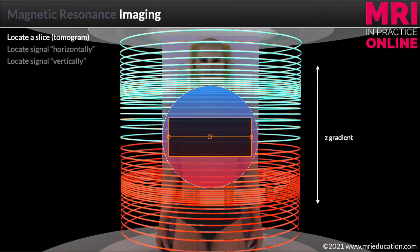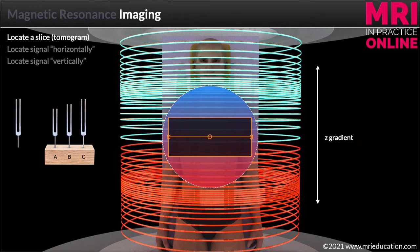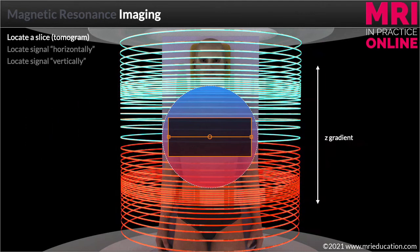Staying with the concept of resonance for a minute, tuning forks are a good example of how resonance works. If two tuning forks share the same frequency, there can be a transfer of energy from one to the other by resonance. Because precessional frequency is proportional to flux density, we can represent the resonant frequencies of the spins along a gradient with imaginary tuning forks of different sizes. Let's imagine that there are five possible slice positions in the data set — they will all have different frequencies from the high to the low end of the gradient.